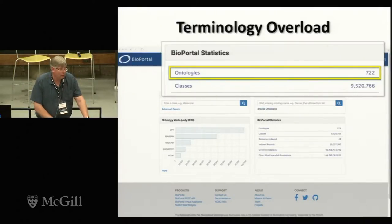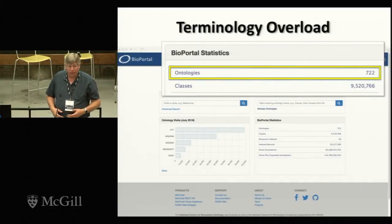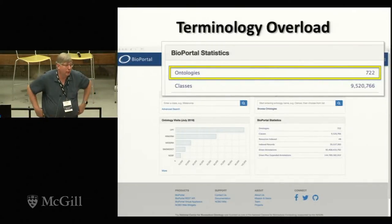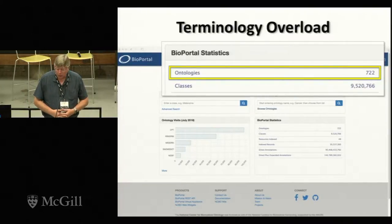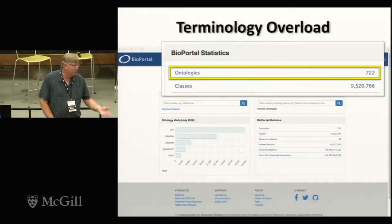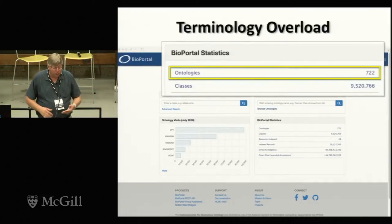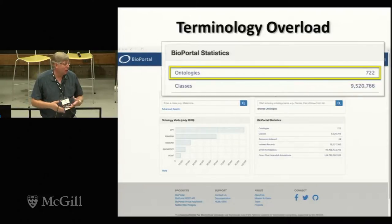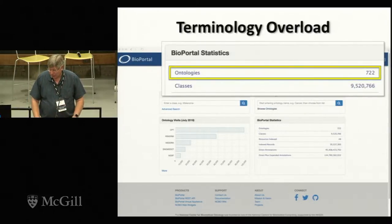One of the things Michelle mentioned was standards. There are a lot of standards out there. BioPortal, which is one of the infrastructure sites for hosting ontologies, is a great site. You go there, you look, and there are 722 ontologies. So you put in your term and try to figure out which of these 20 ontologies to choose. It gets a little unwieldy in terms of standards and vocabularies.